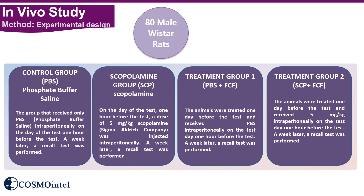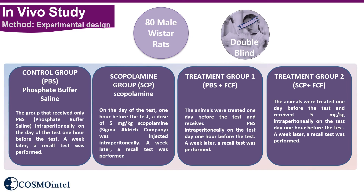18 male Wistar rats were used, with 10 rats in each group. The animals had adequate access to water and food except during behavioral experiments and were divided into the following groups: the control group received only phosphate-buffered saline (PBS); the scopolamine group received 5 mg/kg scopolamine one hour before the test; treatment group 1 received FCF and PBS; and treatment group 2 received both FCF and scopolamine. The experimenter was blinded to treatment status and analysis of variance was used for data analysis.